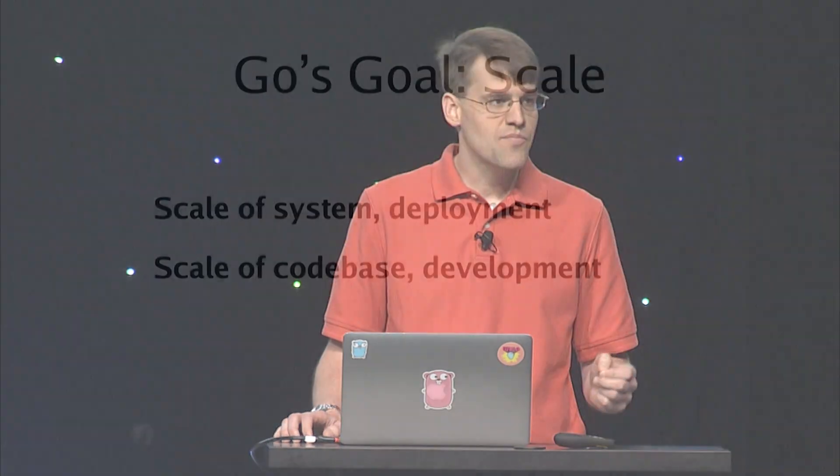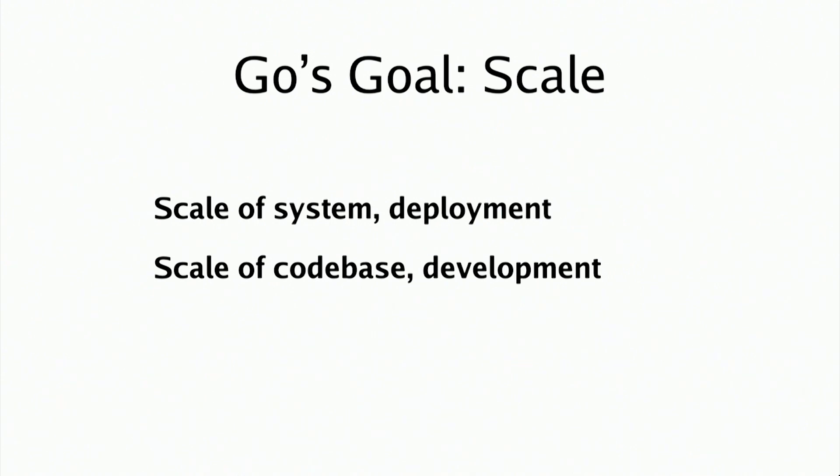The goals we have for Go today are the same as in 2007. We want to make programmers more effective at managing two kinds of scale: production scale, especially concurrent systems interacting with many other servers, exemplified by cloud software; and development scale, especially large code bases worked on by many engineers coordinating only loosely, exemplified by modern open source development. These kinds of scales show up at companies of all sizes. Our goal for Go 2 is to fix the most significant ways Go fails to scale.